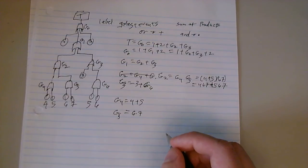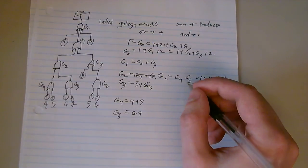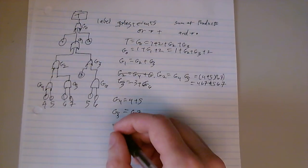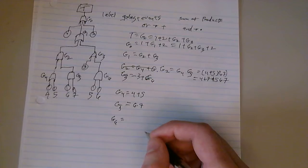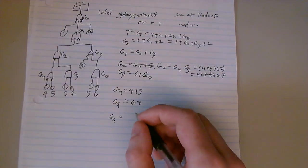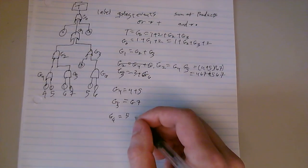And then G6, I know this is getting a little bit unorganized. G6 equals 5, 6.